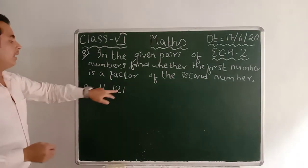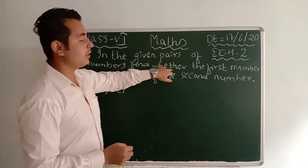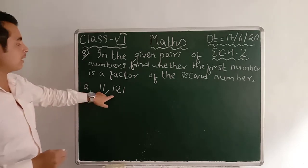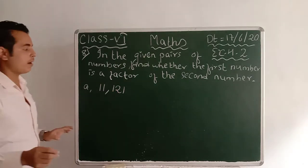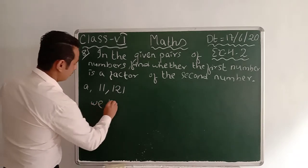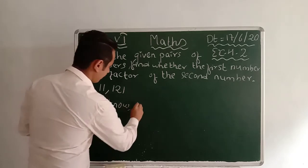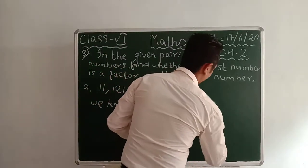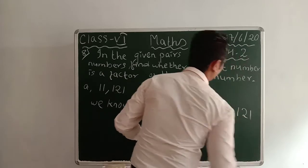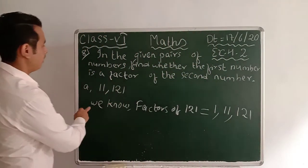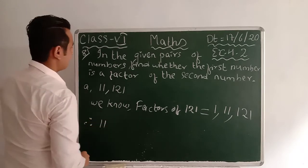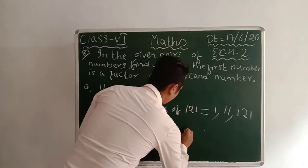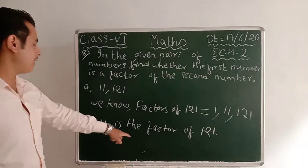Now the question asks us to find whether the first number is a factor of the second number. For question a: is 11 a factor of 121? The factors of 121 are 1, 11, and 121. Yes, 11 is also a factor of 121. Therefore we write: 11 is the factor of 121. This statement is compulsory at the end.